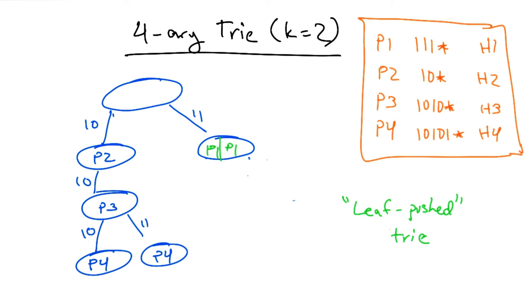So 1, 0 becomes p1 on the left side, and 1, 1 becomes p1 on the right side.